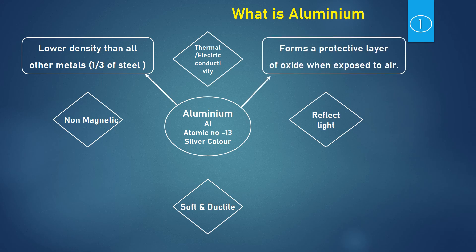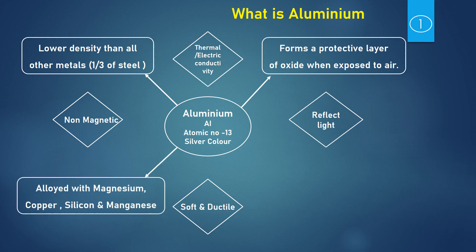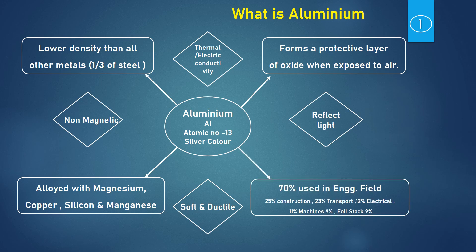It forms a protective layer of oxide when it is exposed to air. Though it is soft and ductile, it can be alloyed with magnesium, copper, silicon, and manganese. This alloying process helps Aluminium to get stronger and gain other qualities to be used in various sectors. It is used in engineering fields — construction, transportation, electrical, and machinery — accounting for 70% of Aluminium usage.